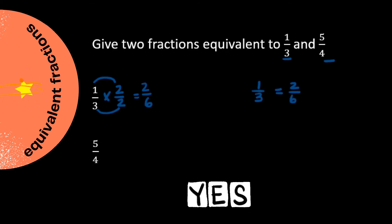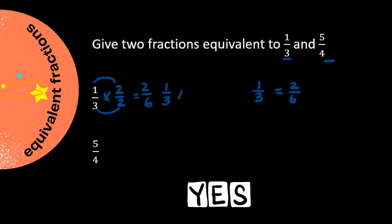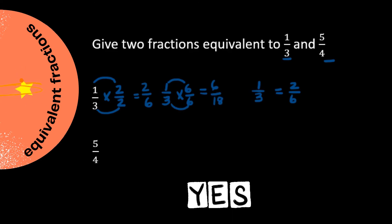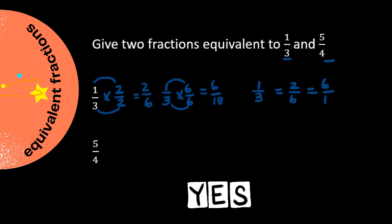We start with one third again and can multiply both the numerator and the denominator by the same number — for example six over six. One times six is six, and three times six is eighteen. We can now say that two equivalent fractions for one third are two over six and six over eighteen.